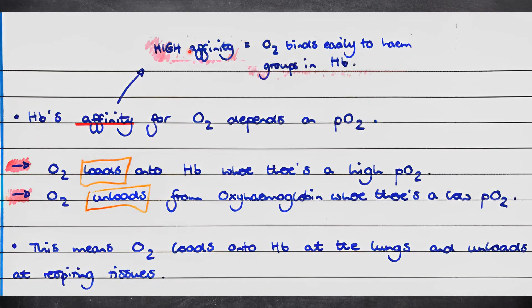Note that haemoglobin's affinity for oxygen depends on the partial pressure of oxygen. If haemoglobin has a high affinity for oxygen, it means that oxygen binds easily to the heme groups. Oxygen loads onto haemoglobin when there is a high partial pressure of oxygen, and unloads from oxyhaemoglobin when there is a low partial pressure of oxygen. This is very useful because it means that oxygen loads onto haemoglobin at the lungs and unloads at the respiring tissues.